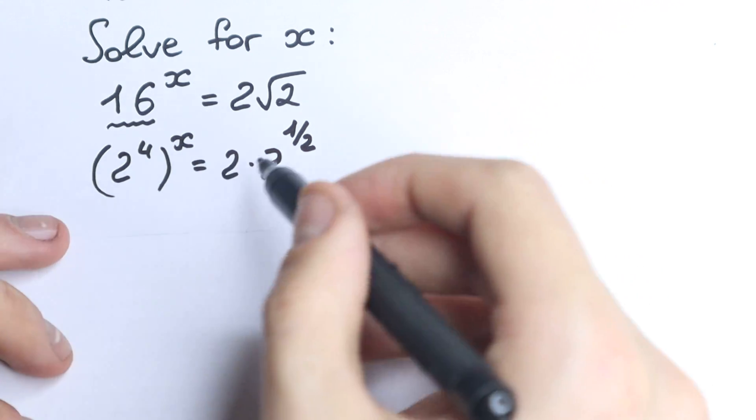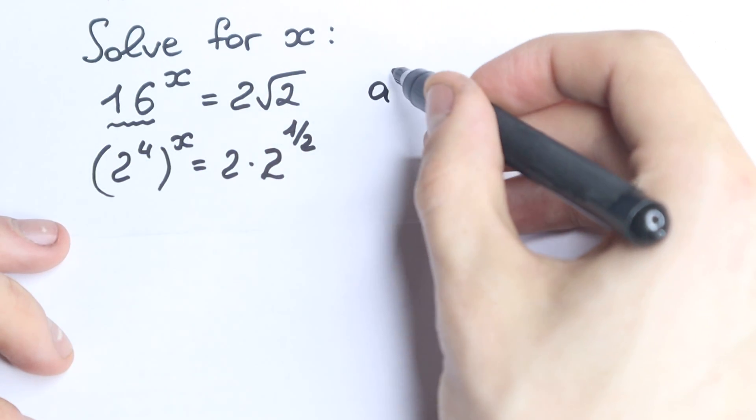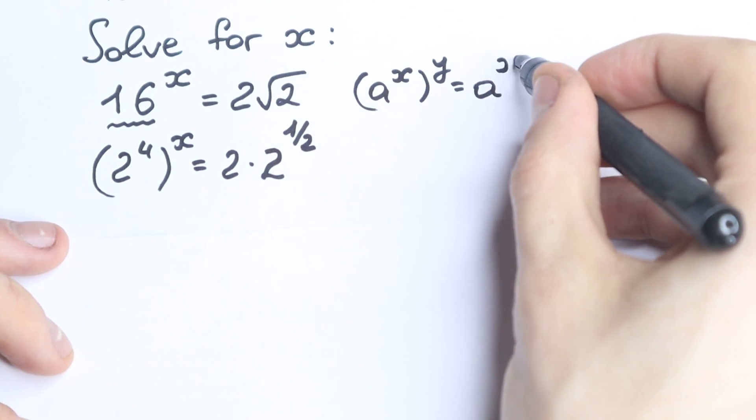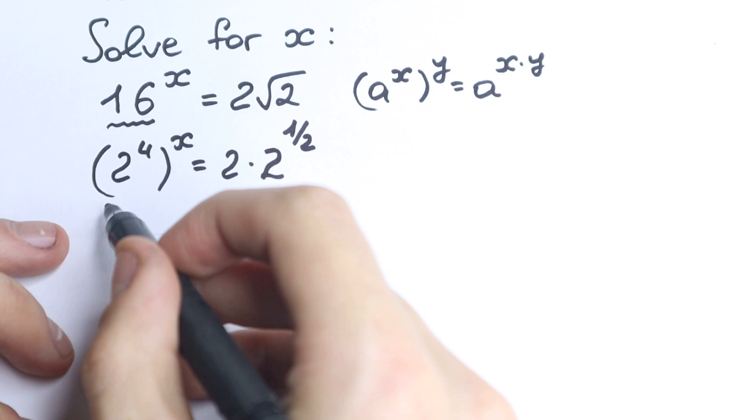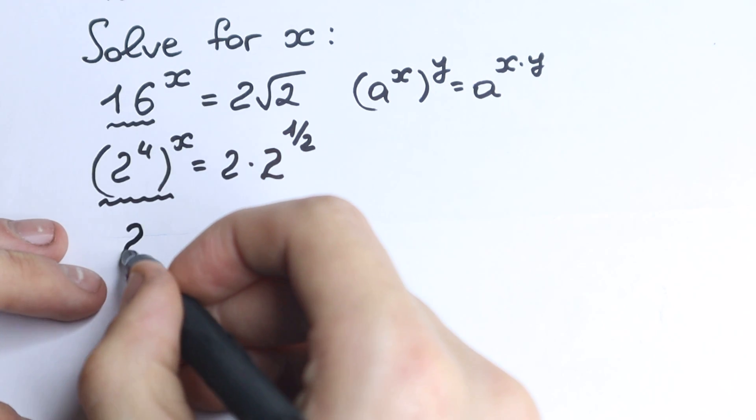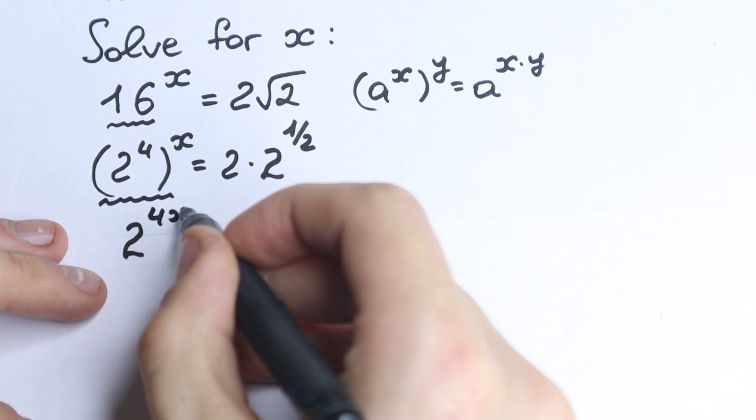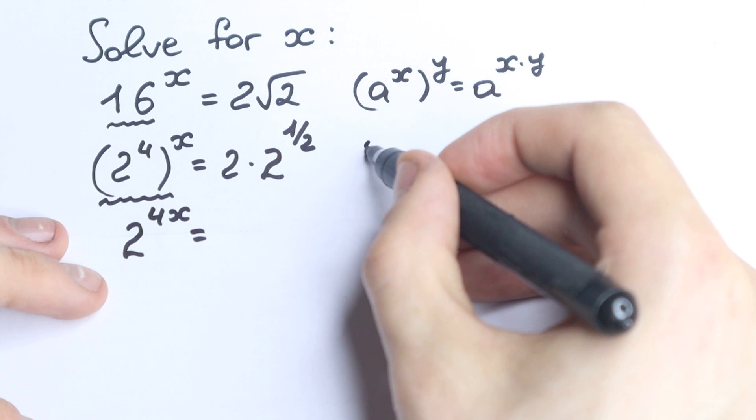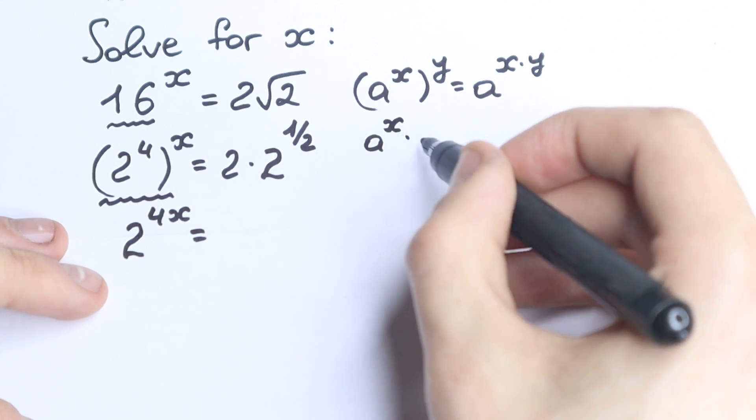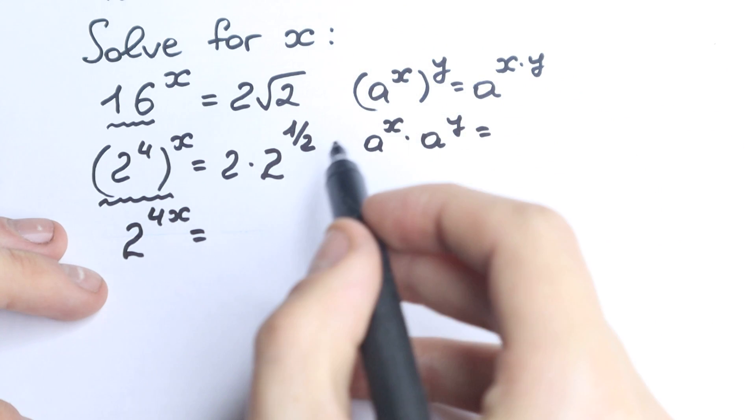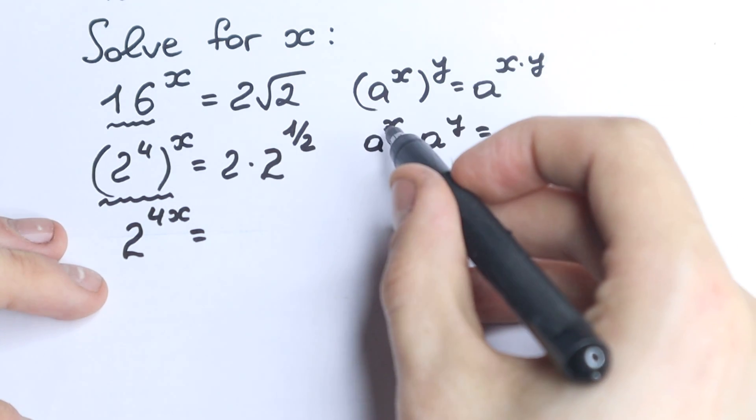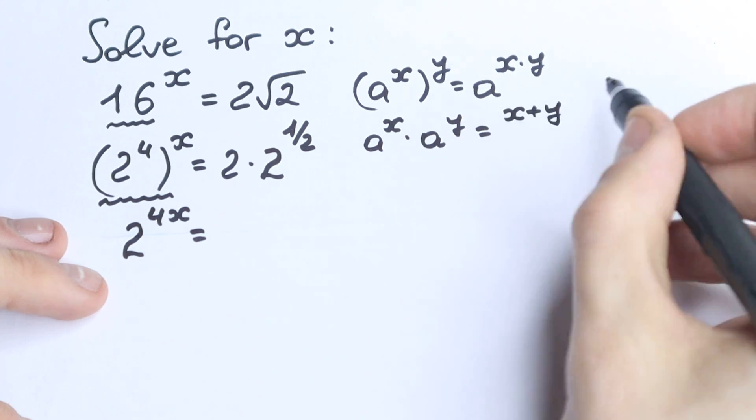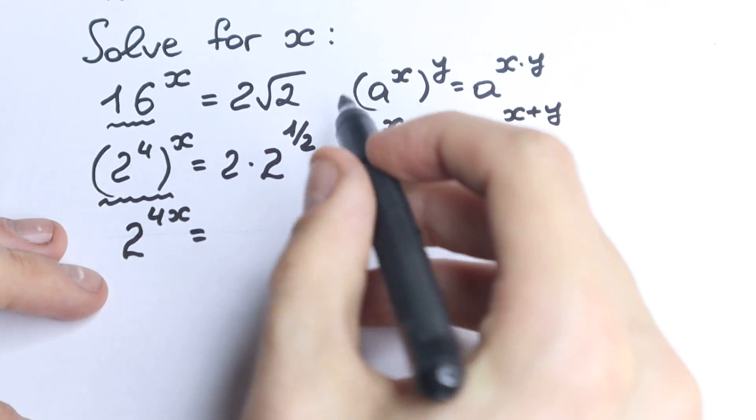Right now we need to know a really great rule. So if we have a to the power x raised to the power y, we will have a to the power x times y, which is really great for us, because right here we can easily apply this rule. So we have 2 to the power 4x. Okay, 2 to the power 4x equal to, and right here we have a really great rule as well. We have a to the power x times a to the power y. If you multiply it, if you have multiplication right here, we can add our powers. So we have x plus y. And let's apply this rule right here, so this one right here and this one right here.